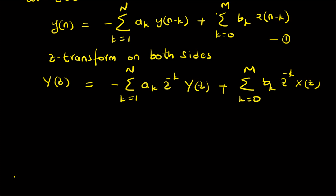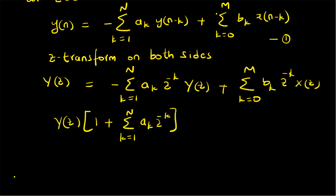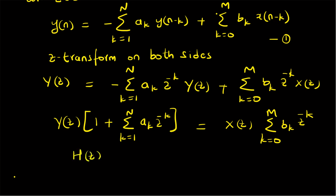We can rearrange this equation to gather all terms with Y(z) and terms with X(z). Gathering Y(z) terms gives Y(z) multiplied by [1 + summation k=1 to N of a_k · z^(-k)]. This equals X(z) multiplied by summation k=0 to M of b_k · z^(-k), where we take X(z) outside the summation.